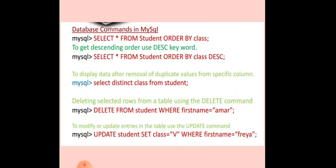For removing duplicate values from a specific column, suppose we want to retrieve only the distinct or unique values, we use the DISTINCT keyword with the SELECT command. We write: SELECT DISTINCT class FROM student. For deleting selected rows from a table we use the DELETE command: DELETE FROM table_name WHERE condition. To modify entries in the table we use the UPDATE command: UPDATE table_name SET column_name = value, and you can also give a condition with the UPDATE command.